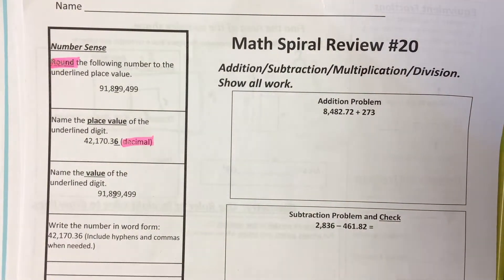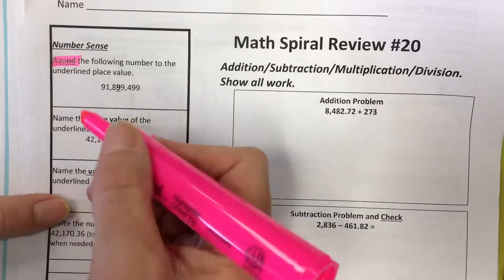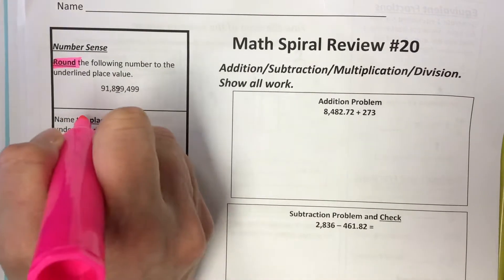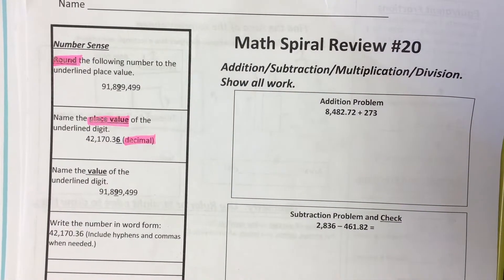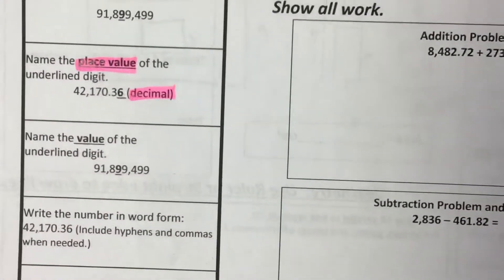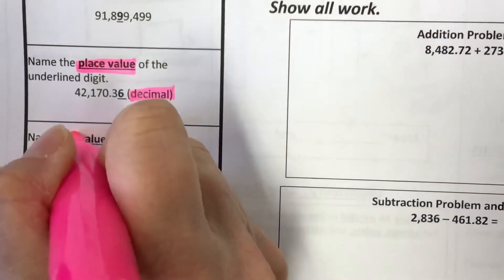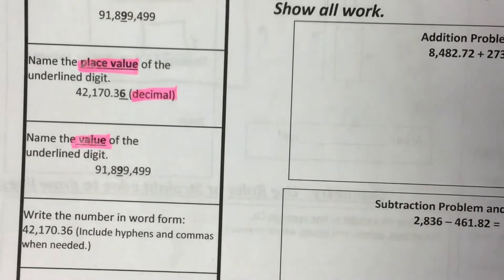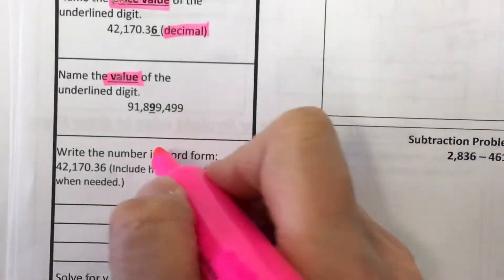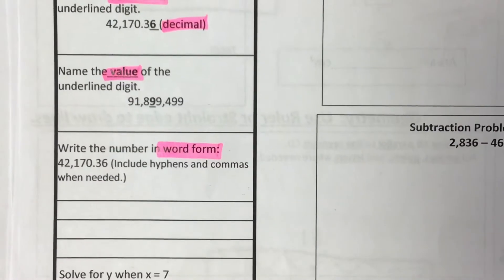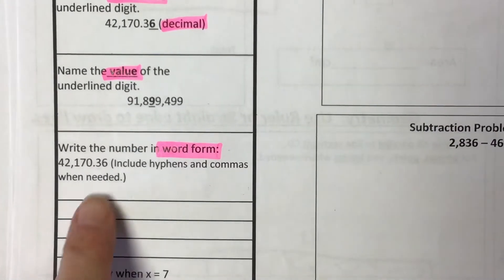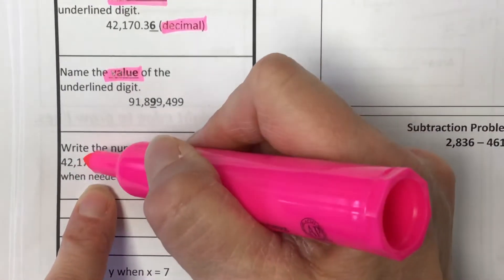And this one's a little tricky. Oh, thank you. Good thing someone else is here and not just me. Name the place value of the underlined digit. Name the value of the underlined digit. Write the number in word form. Include hyphens and commas when needed. Don't forget what that decimal point says.